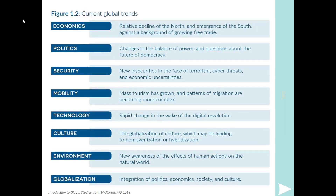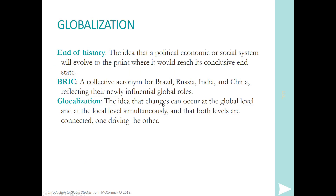Current global trends include the decline of the North and the emergence of the South — or more accurately, the emergence of previously disenfranchised nations. China, for example, was not part of the global community and now is a major player. Key themes are politics, security, mobility, technology, culture, and environment — all of which will inform your paper. There is also the acronym BRIC: Brazil, Russia, India, and China, which the book uses frequently.